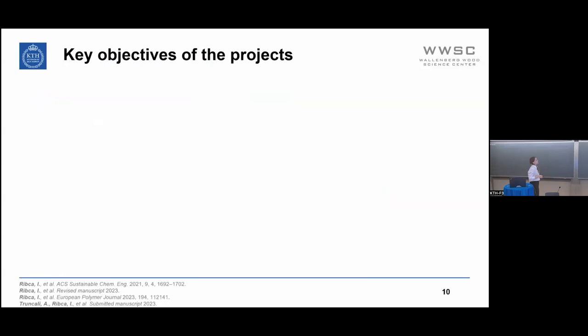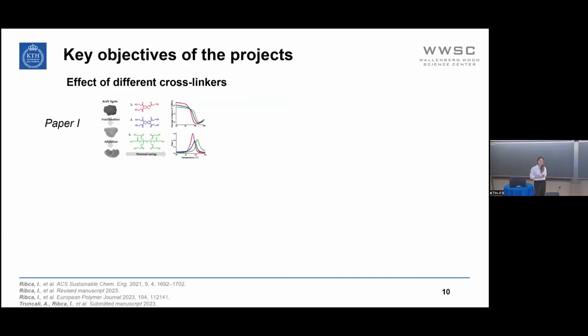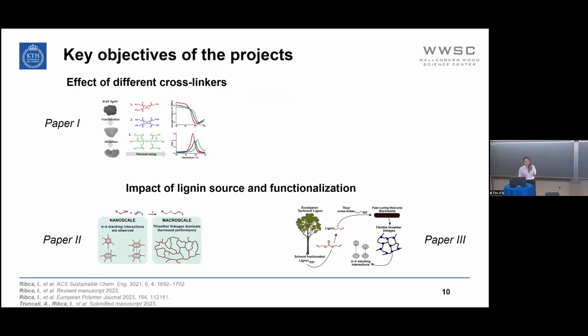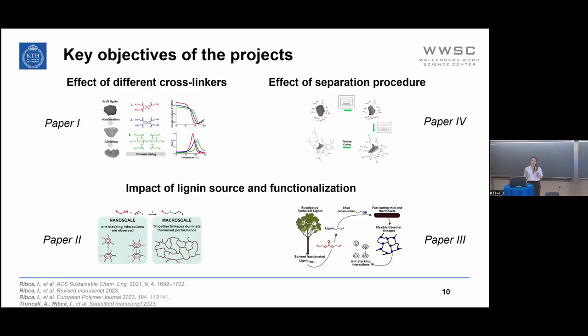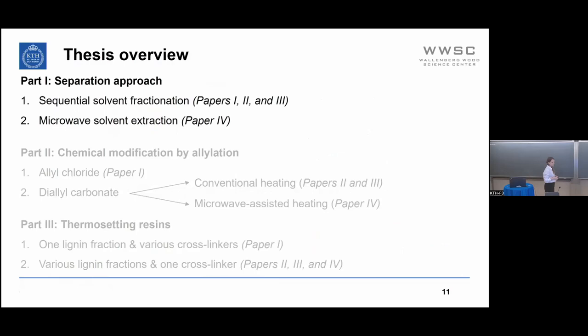The key objectives of the included papers are as follows. Paper one focused on studying the effect of different cross-linkers on the thermosetting properties. Papers two and three focused on the impact of lignin source and functionalization. Paper four focused on the effect of the separation procedure.